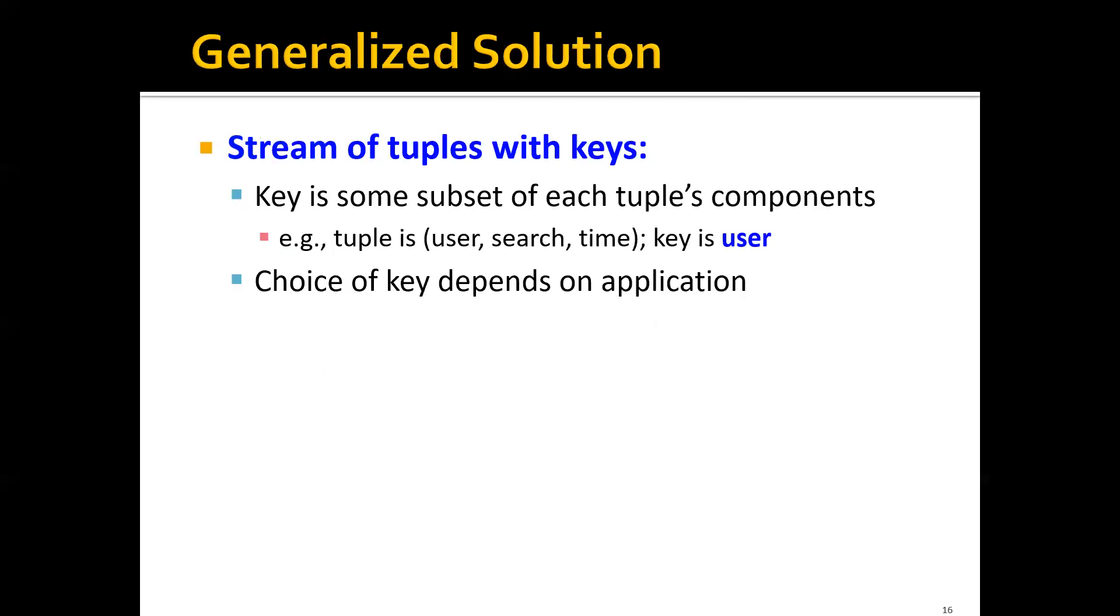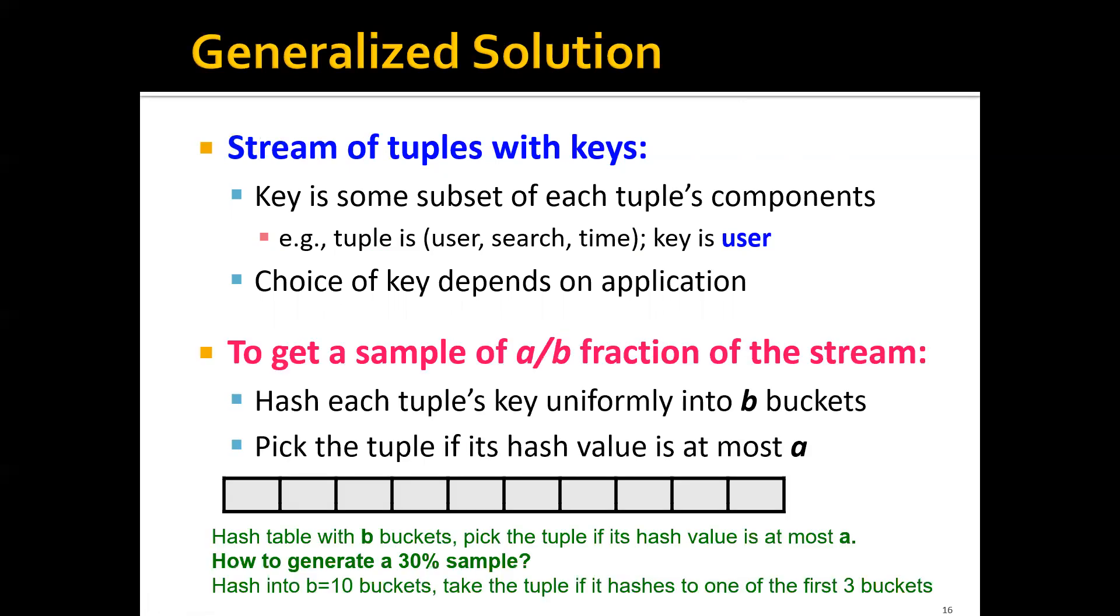In general, for a stream of tuples with keys, where a key is some subset of each tuple's components—for example, in a search engine scenario, the tuple would be user, search, and time, then the key will be user—the choice of key would depend on the application itself.